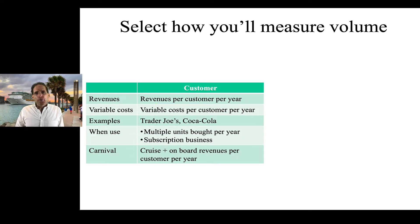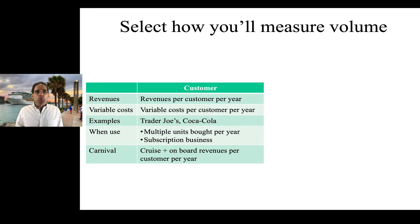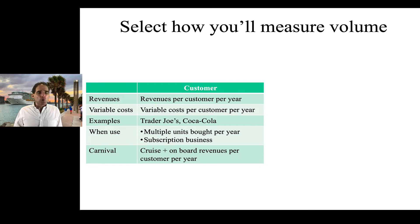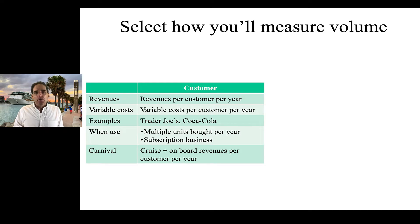So how do we calculate this? The first thing you need to do is think about how you're going to measure volume — the horizontal axis. One way is by customer: you look at revenue per customer per year, and then calculating the contribution margin, you'd also look at variable costs per customer per year. Examples might be Trader Joe's or Coca-Cola. This is useful when you have customers who buy your product multiple times over the course of a year. In the context of Carnival, if we chose this approach, we'd take cruise plus on-board revenues per customer per year.